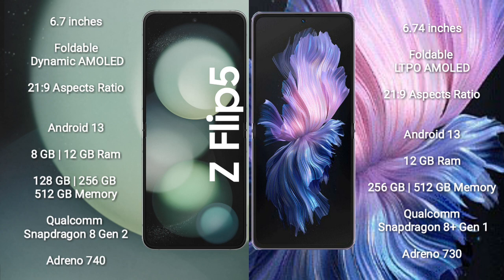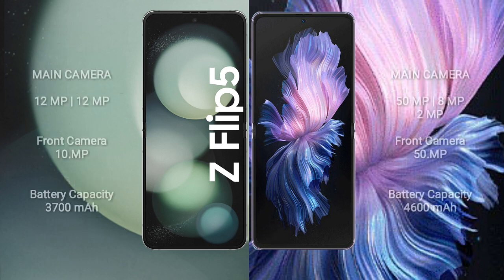Samsung Galaxy Z Flip 5 comes with 8GB or 12GB RAM and 128GB, 256GB, or 512GB internal storage, powered by a Qualcomm Snapdragon 8 Gen 1 processor with Adreno 730 GPU. Vivo X Flip comes with 12GB RAM and 256GB or 512GB internal storage, also with a Qualcomm Snapdragon 8 Gen 1 processor and Adreno 730 GPU.